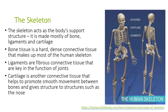The skeleton acts as the body's support structure and is composed mainly of bone, ligaments and cartilage. Bone tissue is hard, dense connective tissue which makes up most of the human skeleton. Ligaments are defined as fibrous connective tissue that are key in the function of joints. Cartilage is another connective tissue that helps to promote smooth movement between bones and give shape to structures such as the nose.